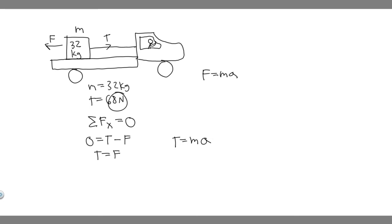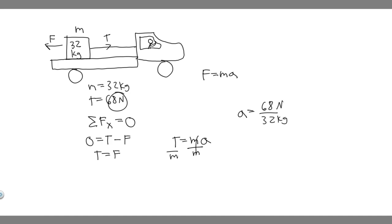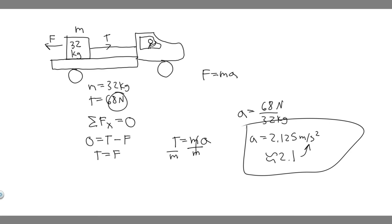Since T is the maximum tension, solving for the maximum acceleration: divide both sides by m. So a equals T divided by m, which is 68 divided by 32, giving a equals 2.125 meters per second squared. You can round to 2.1 m/s² — this is the maximum acceleration the truck can have before the cord breaks.